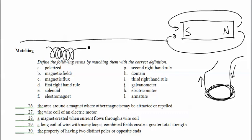The property of having two distinct poles are opposite ends. Well, that means it's polarized. It's got a north pole and a south pole. And that's our example of here. We've got a magnet with two distinct poles. That's polarized.